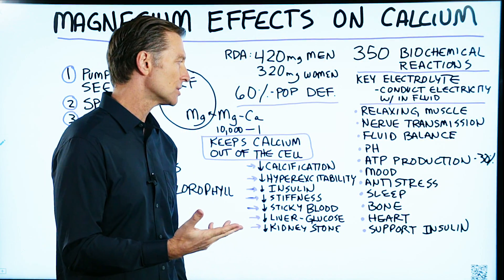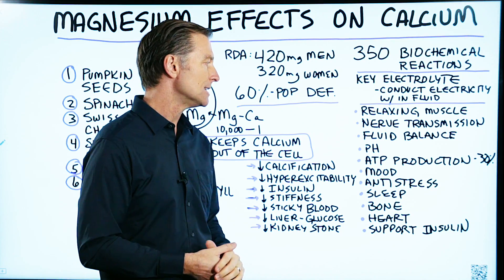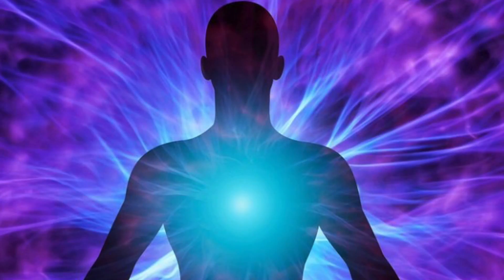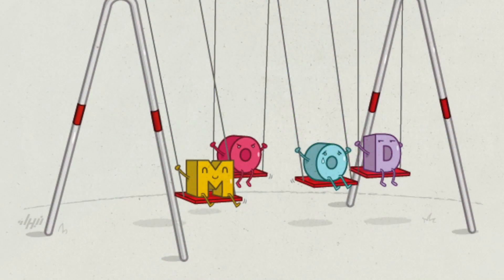It affects fluid balance, pH, and ATP production, which is the energy currency of the body. Magnesium is also involved in mood and making serotonin.